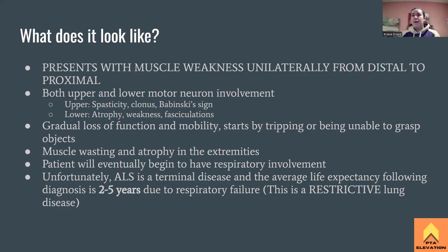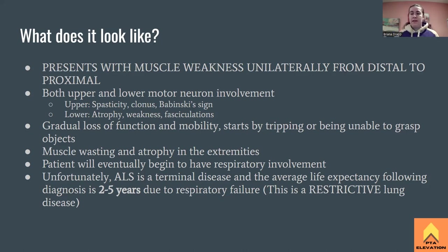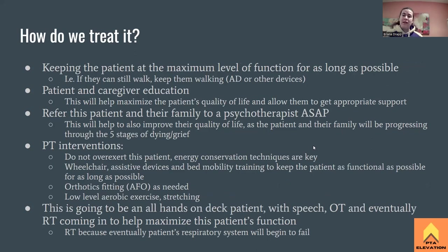ALS is classified as a restrictive lung disease because anything impairing the lungs' ability to function restricts breathing. Motor neuron involvement of the diaphragm — similar to Guillain-Barré — and loss of postural muscle control cause the lungs to be squished, restricting their function.